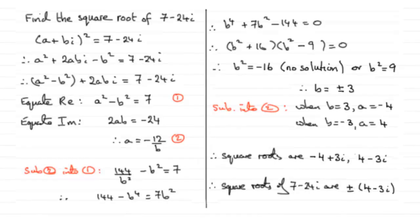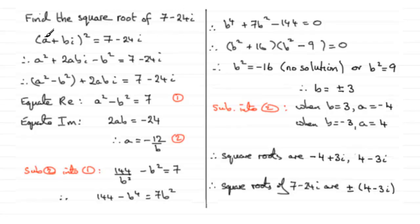Welcome back. Hopefully your solution looks something like this. The square roots of 7 minus 24i are plus or minus the quantity 4 minus 3i. To save time I've written this out beforehand. Find the square root of 7 minus 24i: let the square root equal a plus bi, so a plus bi all squared equals 7 minus 24i.